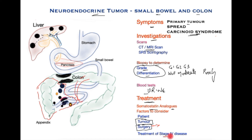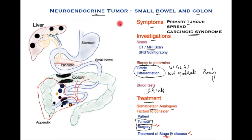In this tumor, stage 4 disease — which involves spread to the liver, lymph nodes in far-off places, or other distant sites — would make patients candidates for aggressive treatment including surgery and other modalities, which will be discussed separately. This was a brief overview of neuroendocrine tumors of the small bowel and colon. Please review other videos in this series in the playlist, and if you have any comments, please do share.